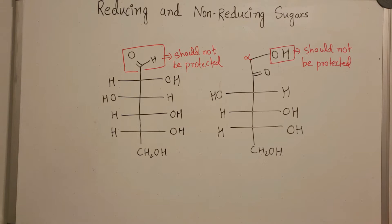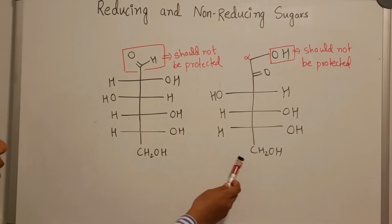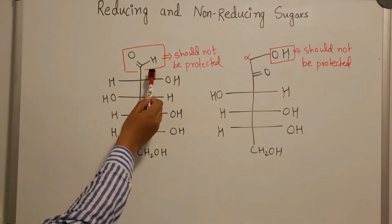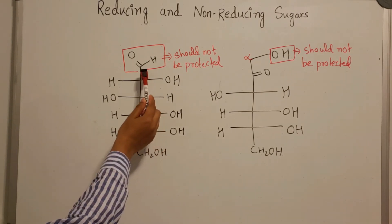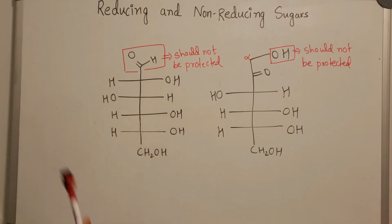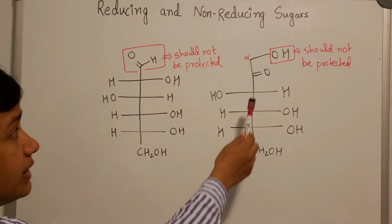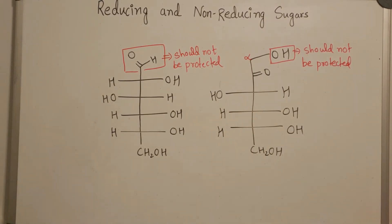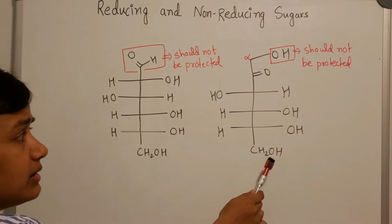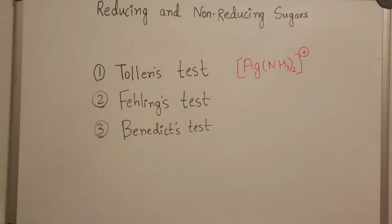Any carbohydrate that is capable of reducing others and acts as a reducing agent is called a reducing sugar. It is quite easy to tell if a carbohydrate is reducing or not by looking at its open chain form — the Fischer projection. If it is an aldose sugar, it is a reducing sugar, and it is absolutely crucial that the aldehyde should not be protected. In the family of ketones, it is only the alpha-hydroxy ketone where the hydroxy is not protected that comes under the class of reducing sugars.